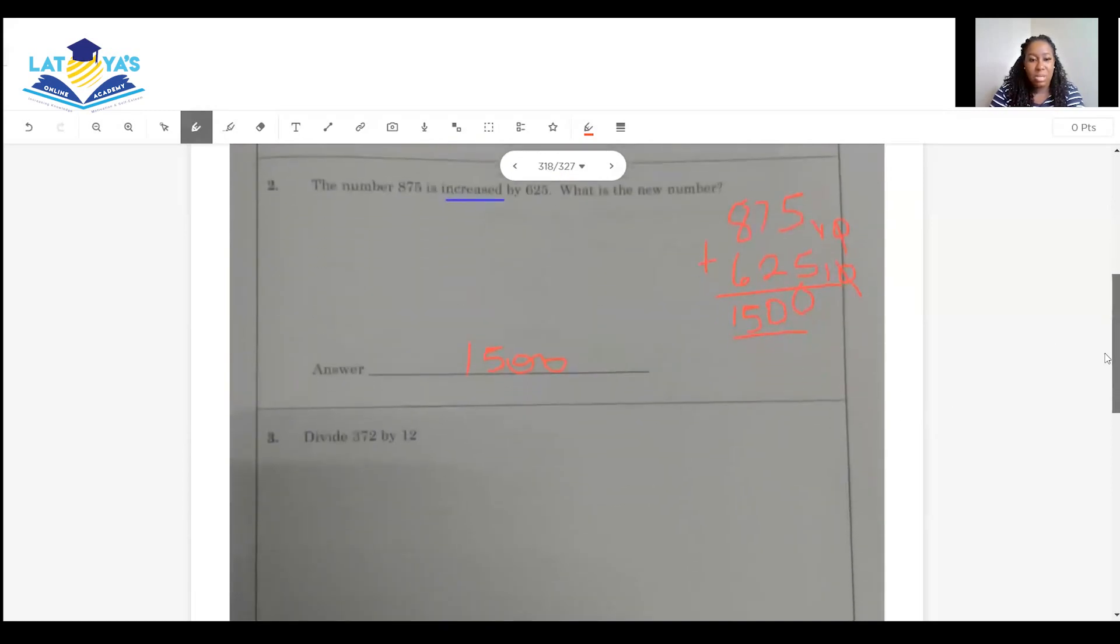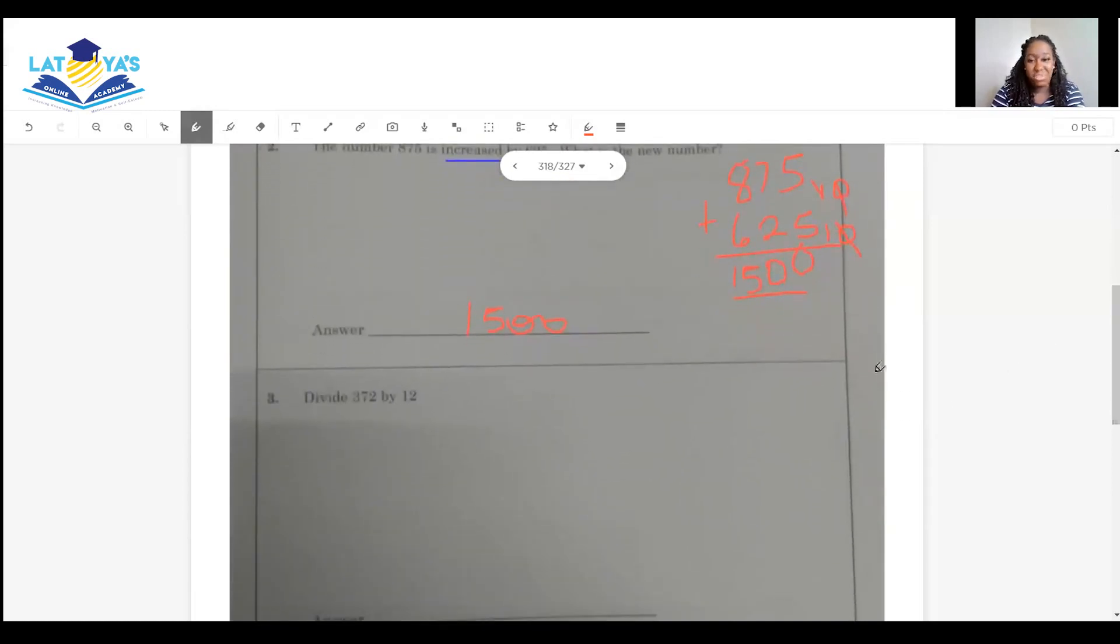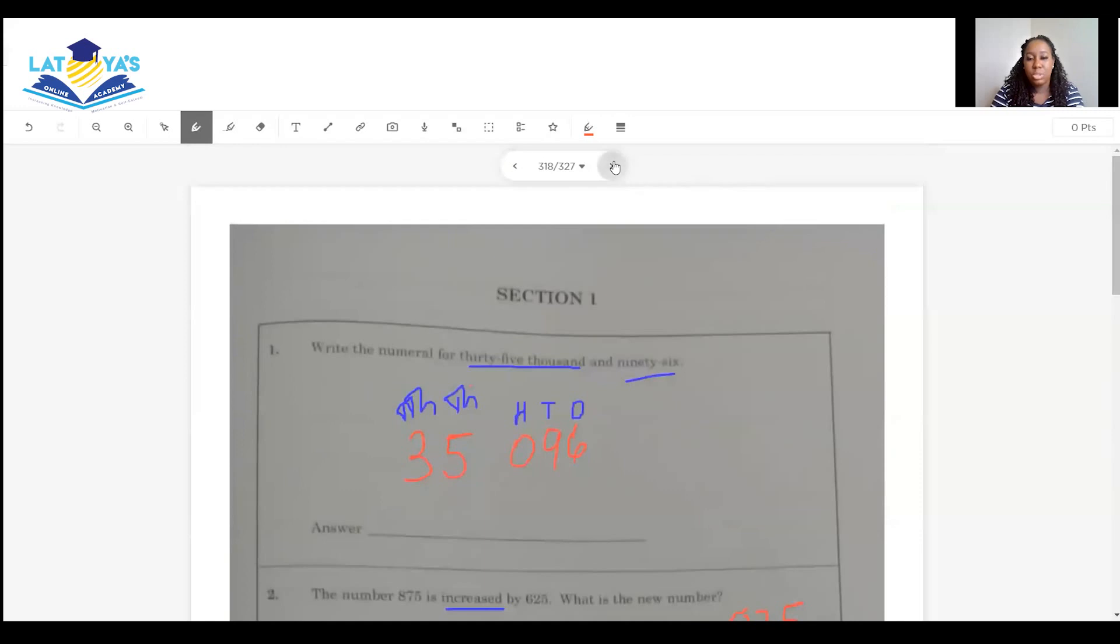Question three, divide 372 by 12. 12 can go into 37 three times, because 12 times 3 is 36, with remainder of 1. And 12 into 12 is 1. So the answer is 31. That's it for the first page.